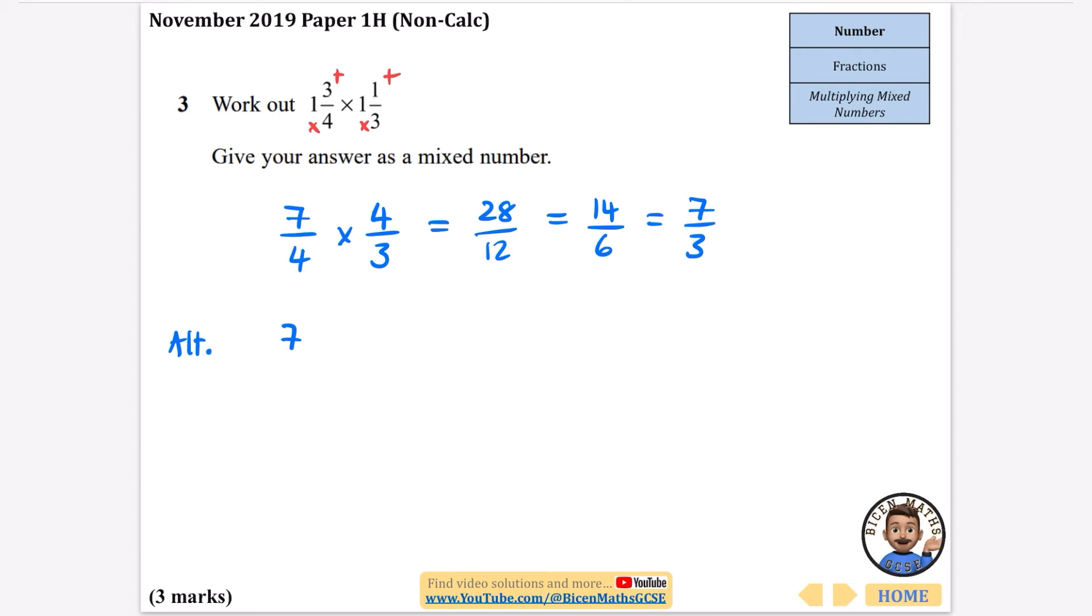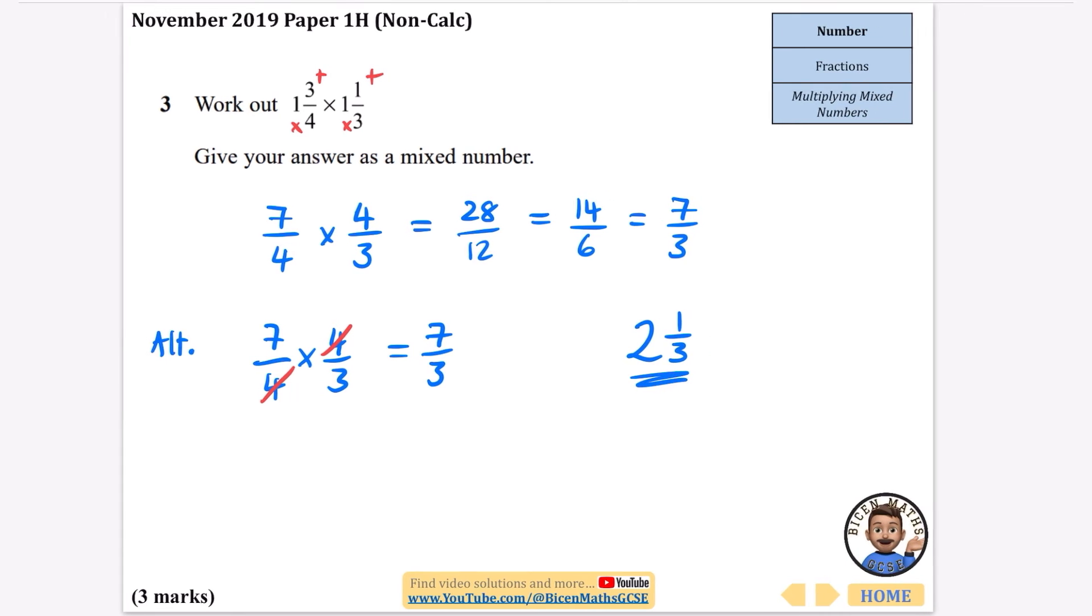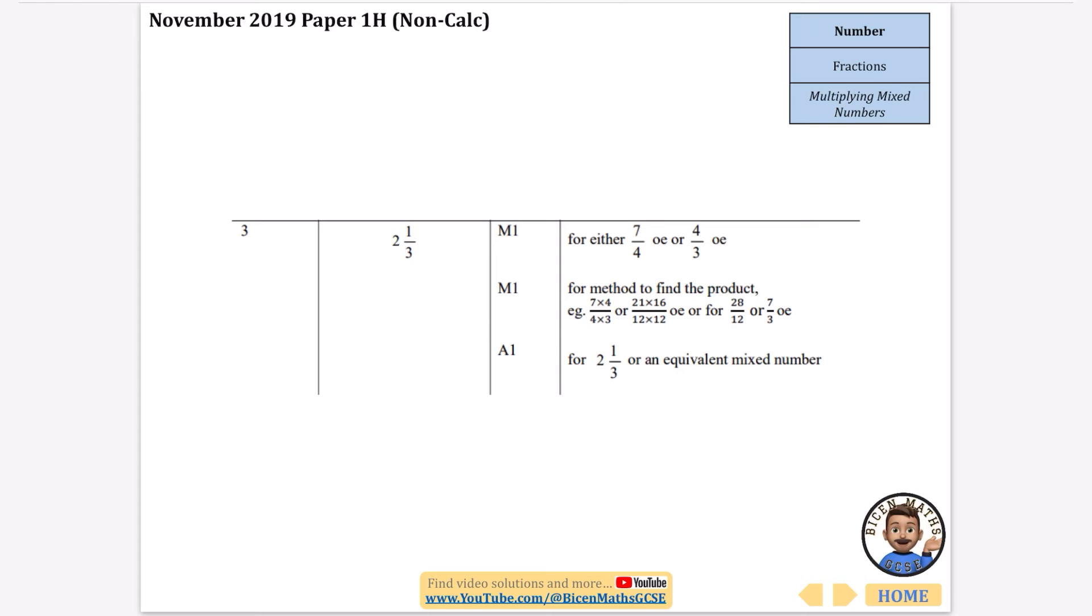So here's my alternative method. Like I did on the previous page, I can actually just do the 4 here, cancelling with that 4 down here because it's multiplication. And we go straight to that answer of 7 over 3. Now, 3 goes into 7, it goes in twice with 1 left over. So the answer is 2 and 1/3. Yep, that's the correct answer for this.